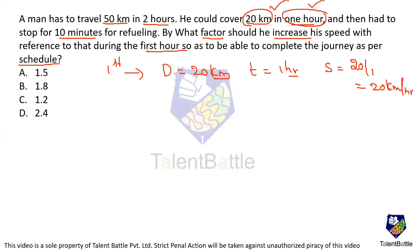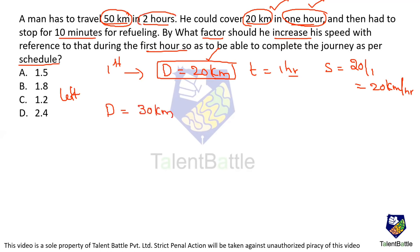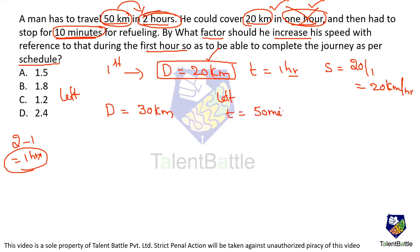Now let's identify the required speed. 20 kilometers are completed; total is 50 kilometers, so the distance left is 30 kilometers. This distance should be covered within the remaining time. Total is 2 hours; 1 hour is already completed, leaving 1 hour. But he stops for 10 minutes, so time left is only 50 minutes, which equals 50 divided by 60 or 5 by 6 hours.